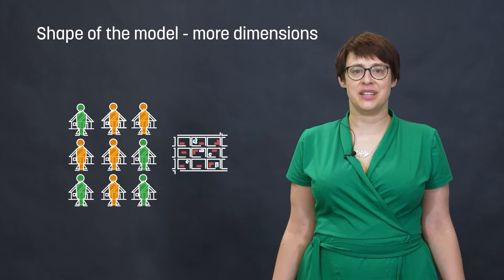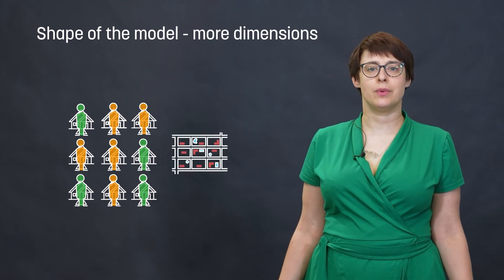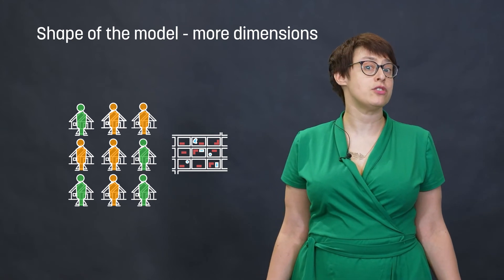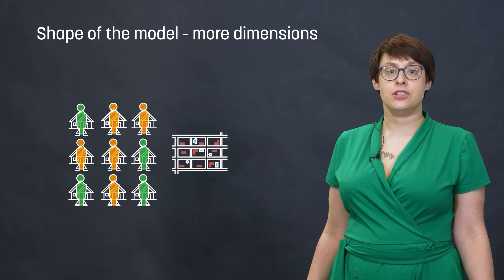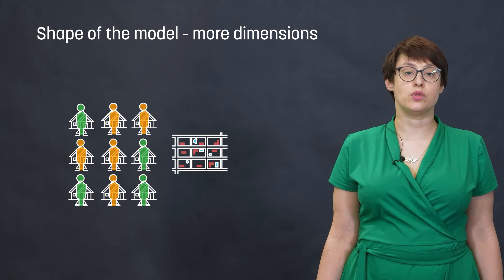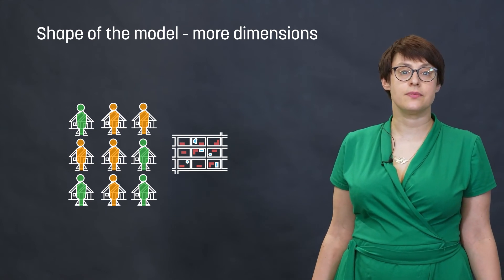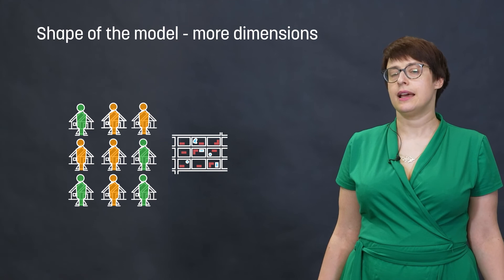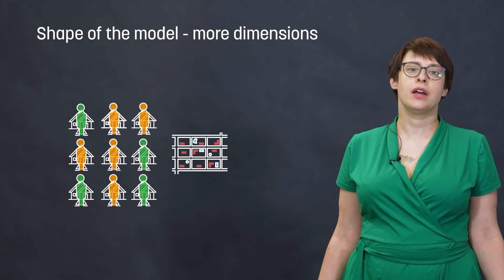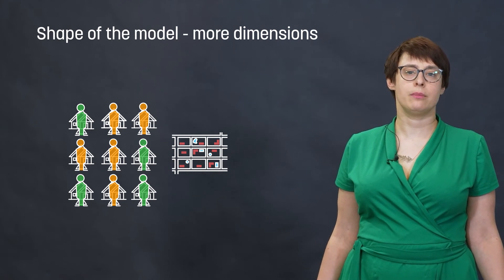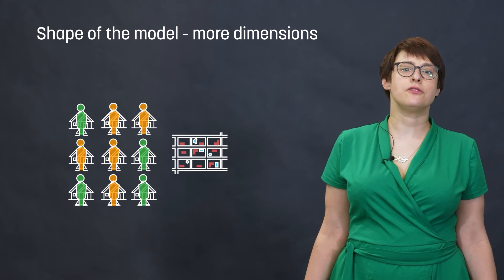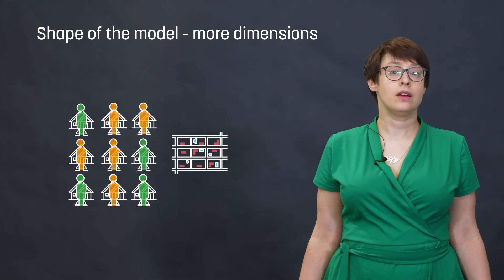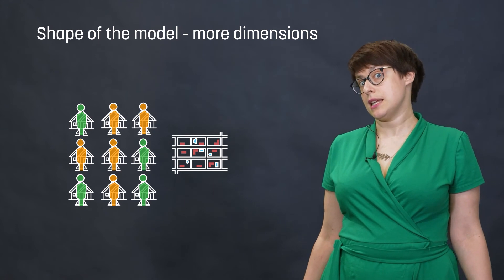And finally, we can change the shape of the model also by adding more dimensions. Let's imagine changing line view into square view. In this case a city is similar to a chess board. And yes, in real life most cities have a minimum of two dimensions. So let's think about it as a beginning to the next steps.